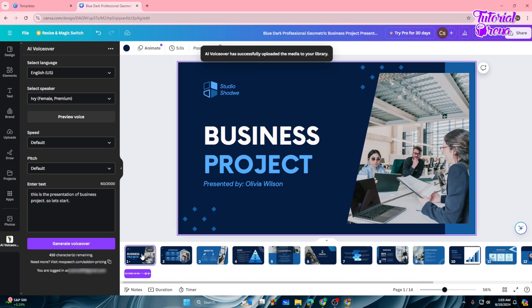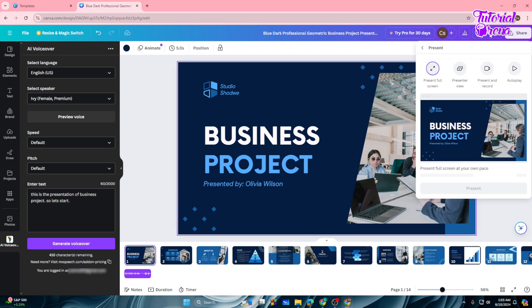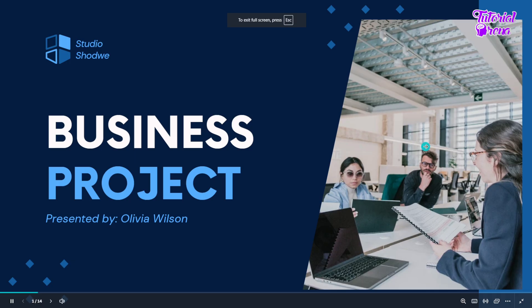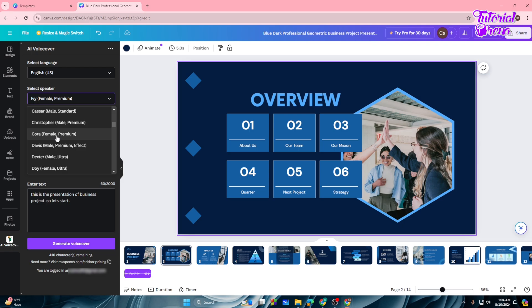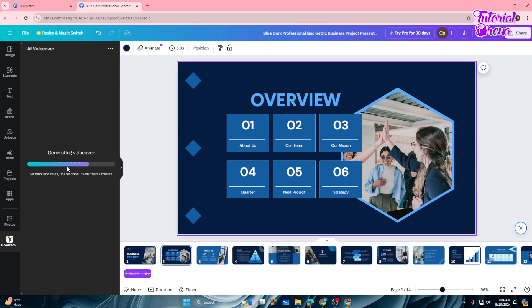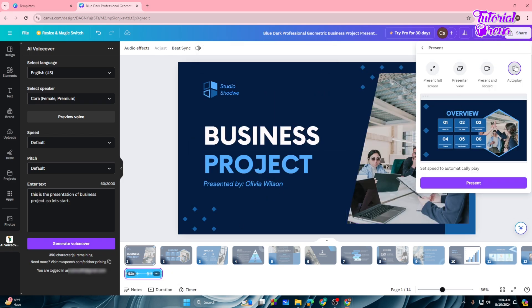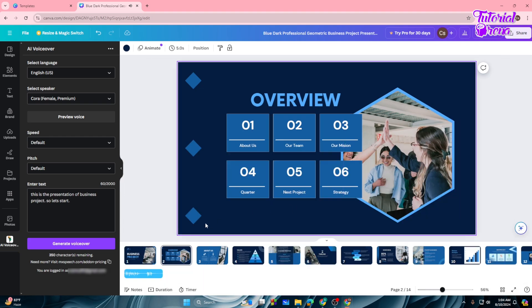To play the voiceover, go to the 'Present' option, tap 'Autoplay,' then tap 'Present.' It plays: 'This is the presentation of business project, so let's start.' The voice doesn't sound very cool, so we can select another voice — like 'Clover.' Delete the old one, generate the voiceover again, then tap Present and Autoplay to hear the new voice.